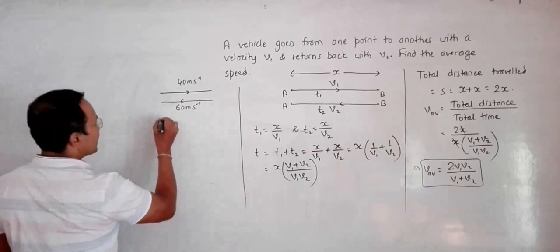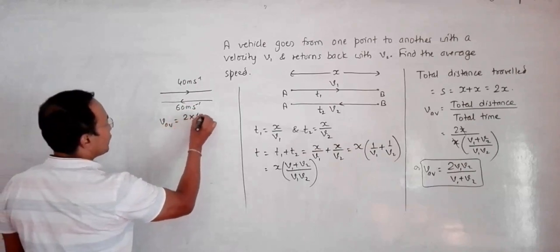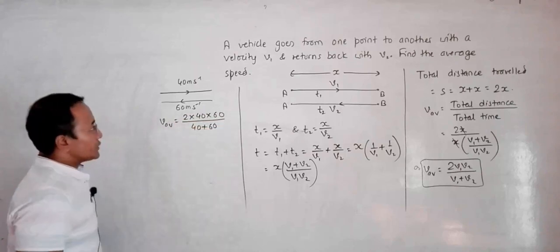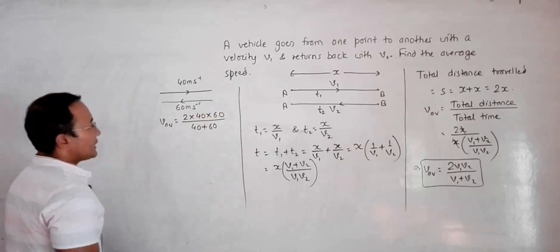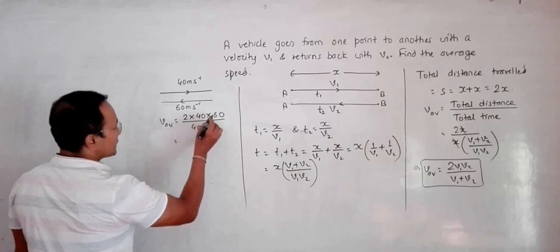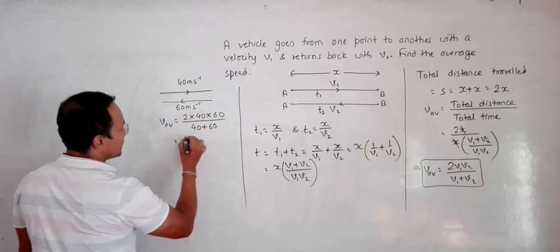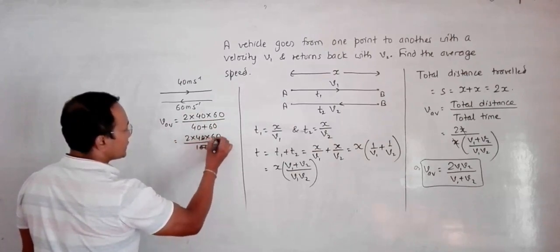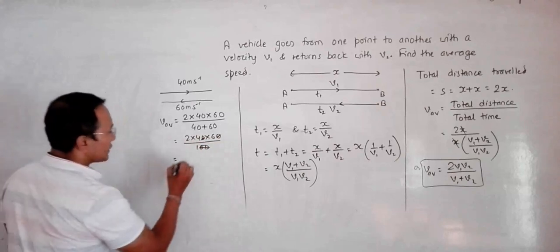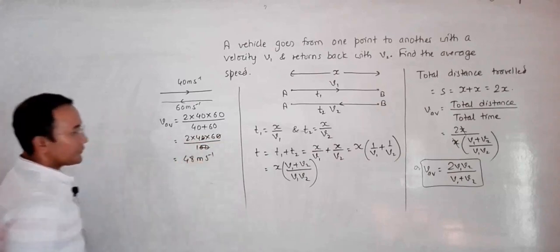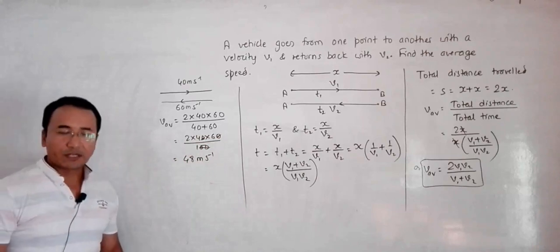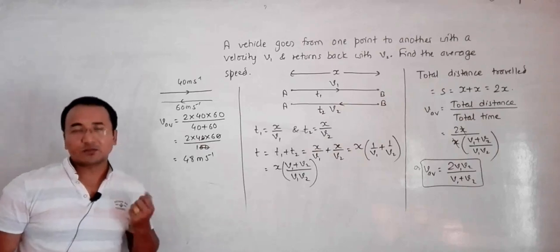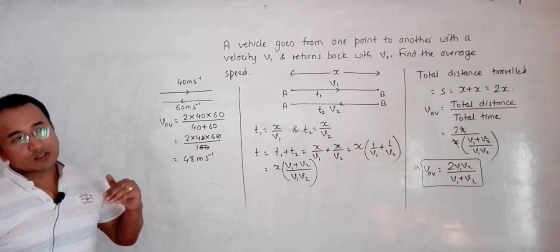Let's discuss a numerical example: the vehicle goes at 40 m/s and returns at 60 m/s. The average speed is v_average = 2 × 40 × 60 / (40 + 60) = 4800 / 100 = 48 m/s. So the average here is 48 m/s, not 50 m/s.